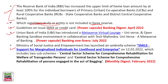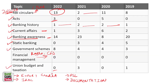So if you analyze the financial awareness section, the majority of questions — about 27 to 28 out of 40 — come from banking awareness and RBI circulars. If you add government schemes, you can expect 33 to 34 questions out of 40 from these three topics: RBI circulars, banking awareness, and government schemes.